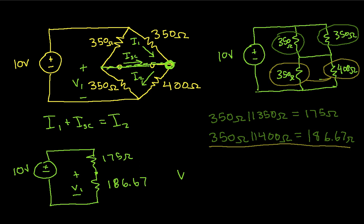So V1 will be 186.67 over 186.67 plus 175 times 10 volts, which when I work this guy out, gives me that V1 is 5.168 volts.